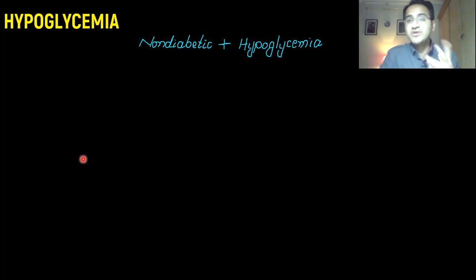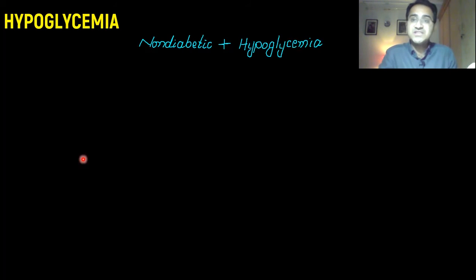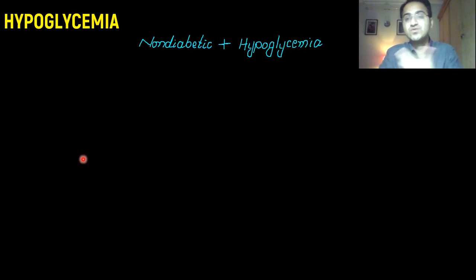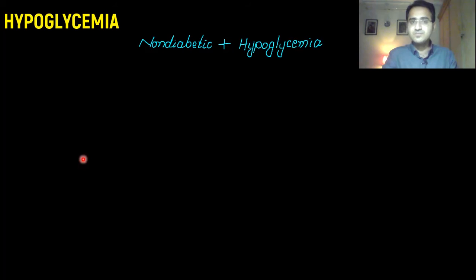The cause of recurrent hypoglycemia in non-diabetics can be an insulinoma — a pancreatic tumor that secretes insulin and causes glucose levels to fall — or it can be factitious, where the patient is taking either hypoglycemic drugs or insulin injections to fake hypoglycemia despite not being diabetic.